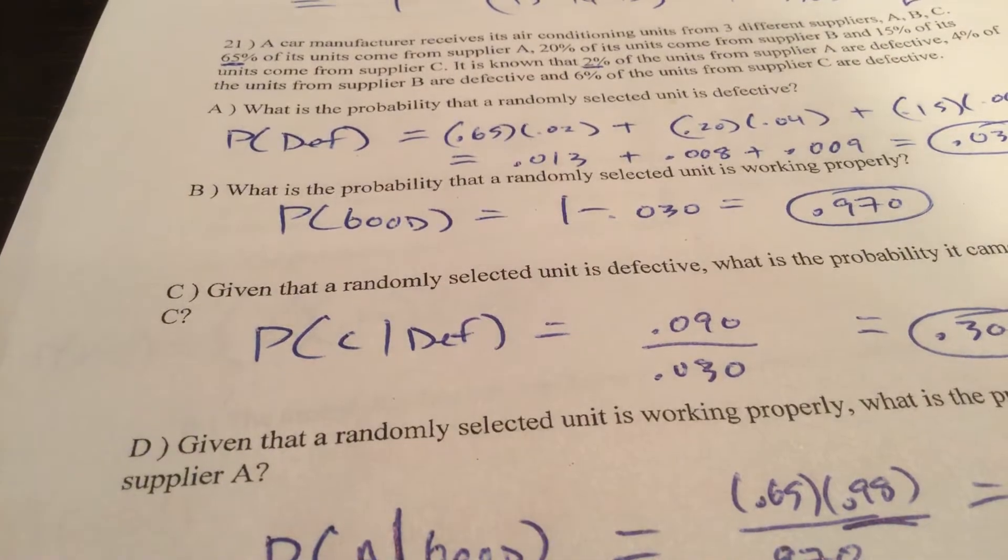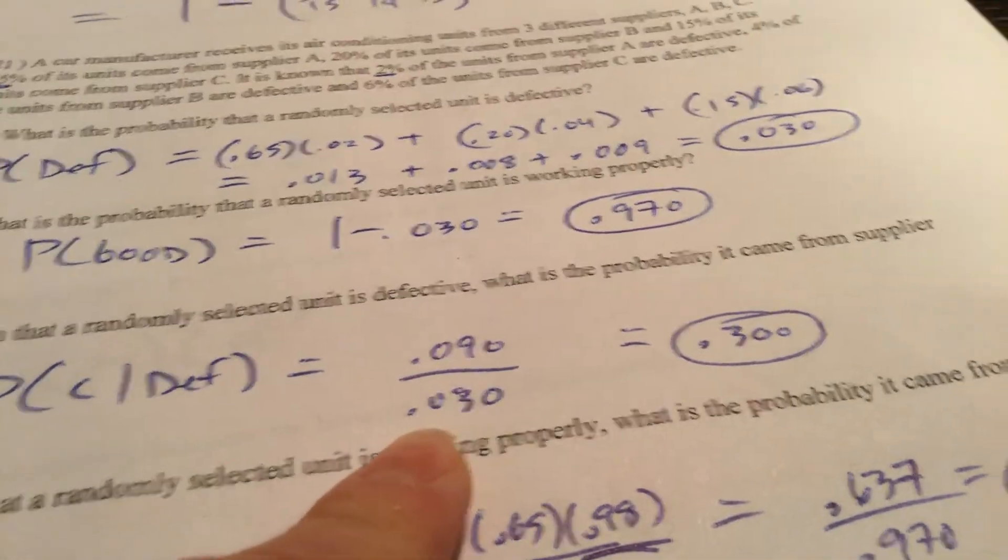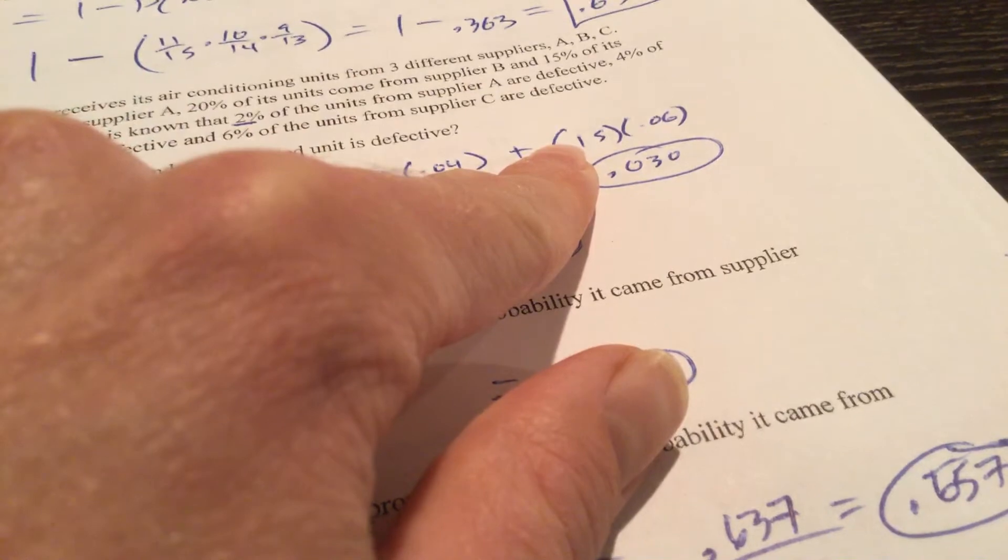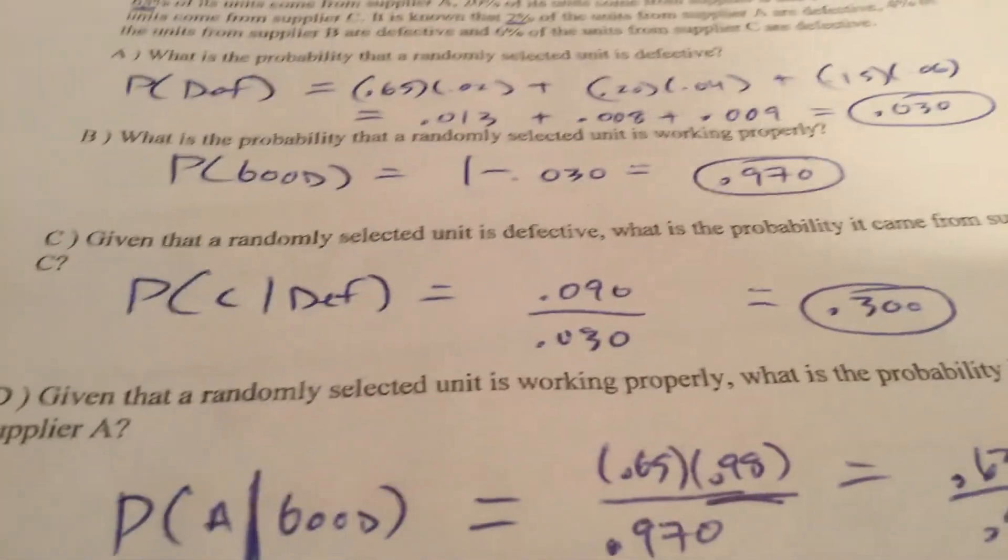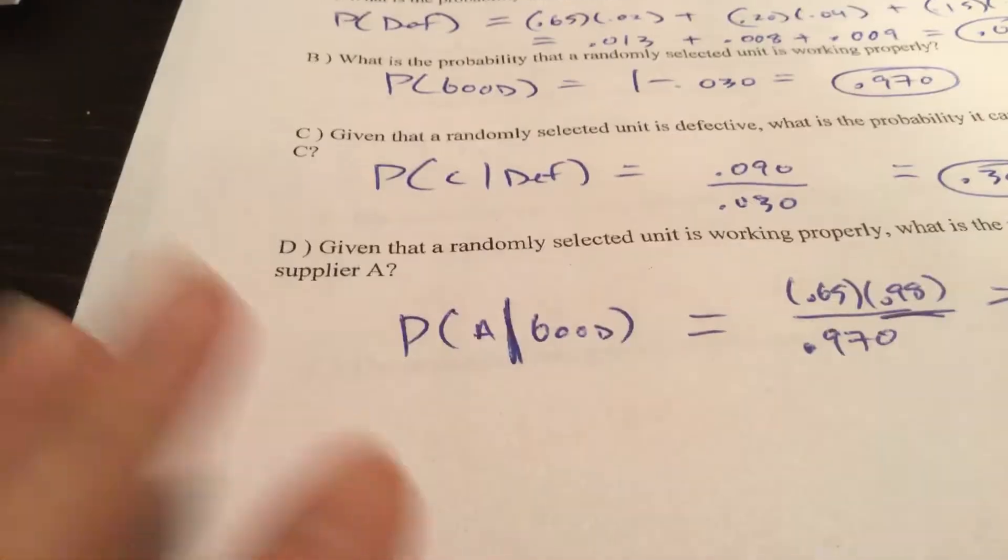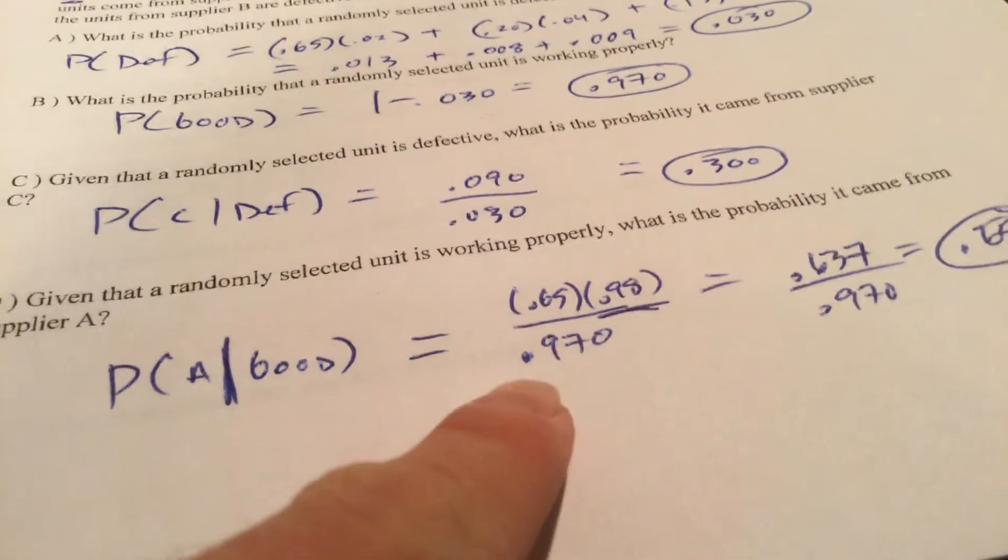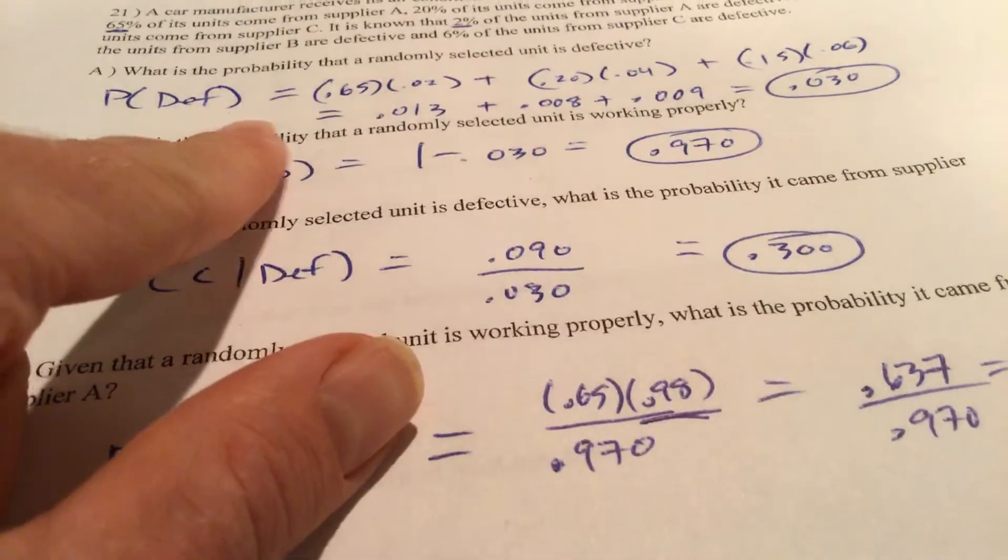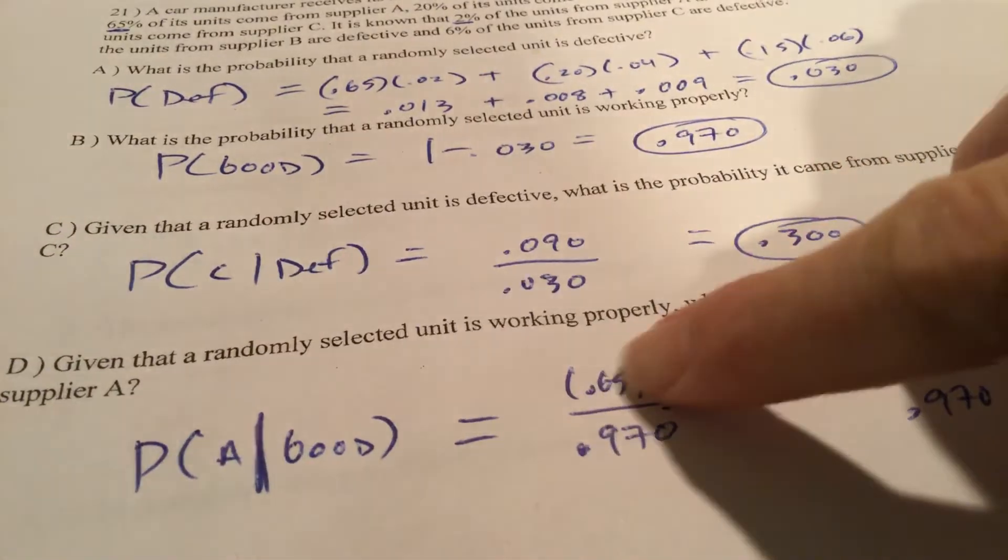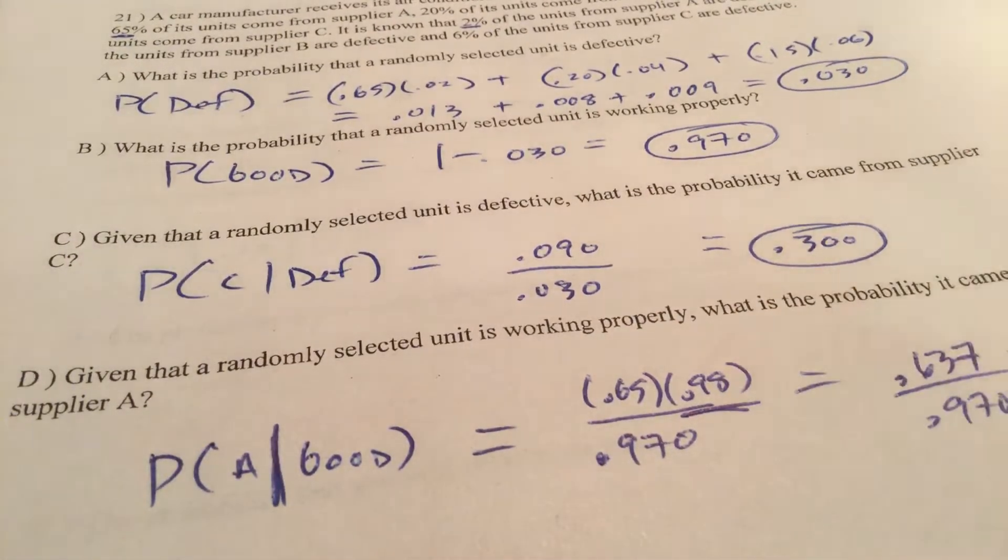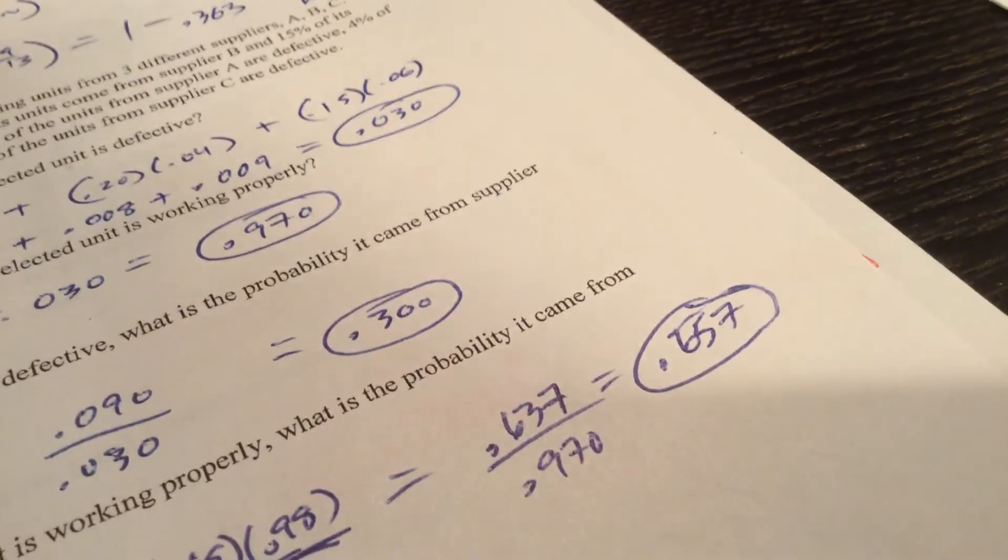Conditional probability. Given that it is defective, what's the probability it came from C? So 0.030 is the denominator. The numerator is the intersection of it coming from C and being defective. 30% chance that given it is defective that it came from C. Given that a randomly selected unit is working properly, what's the probability that it came from A? 0.970 needs to be the denominator. The intersection of it coming from A and it being good from A is a 98% chance that it works. So 0.98 times 0.65. That's the numerator.